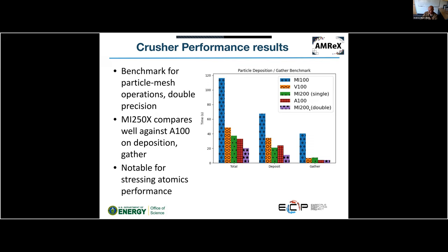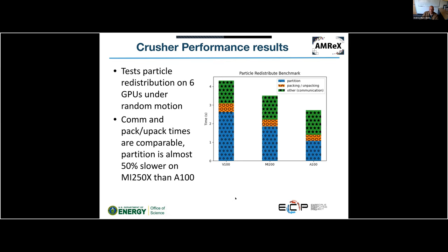This is a particle redistribution benchmark with six GPUs moving particles randomly and migrating them to the correct GPU. The operation is broken down into communication (green), packing/unpacking time, and partition time. On Summit, Crusher, and A100 systems, the communication and packing times are similar, but the partition step drives the difference. The MI250X still lags behind the A100 on this partition part.